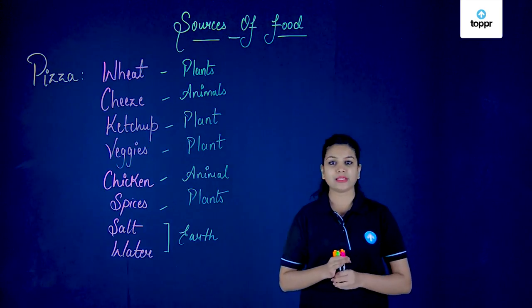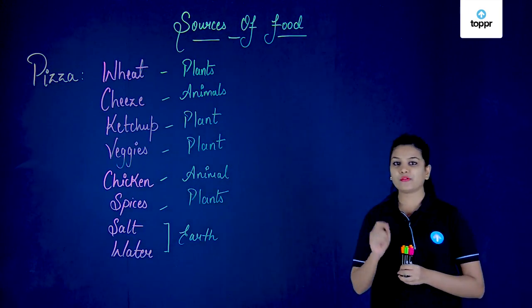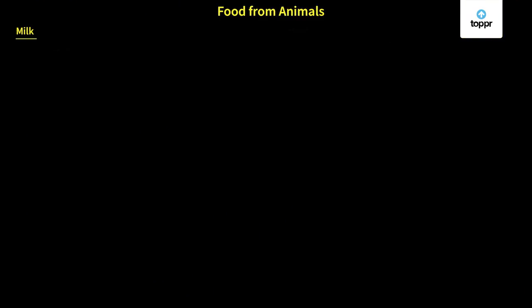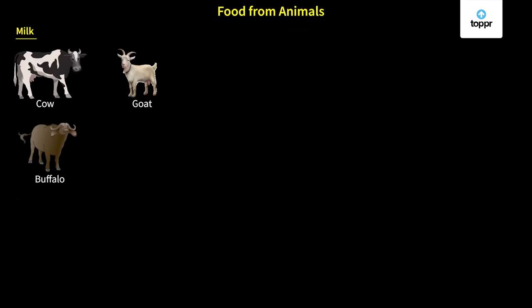Similar to plants, animals can also give us a number of products. The most important food item we get from animals is milk. Milk can be obtained from cow, goat, buffalo, and camel. Milk is a very important food item and it can be used to prepare curd, ice cream, ghee, butter, cheese, and many other products.